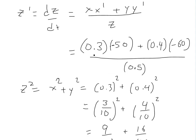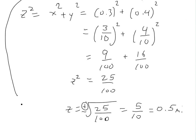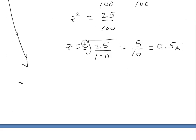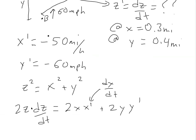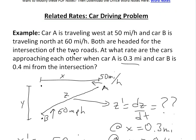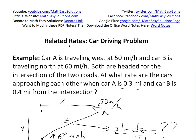Plugging everything into the calculator, z prime equals negative 78 miles per hour. So the cars are approaching each other at 78 miles per hour. That's the rate at which z is changing. That's all for today — if you learned from this related rates problem, you can download the notes in the Dropbox link below and watch related videos in the description. Thanks for watching and stay tuned for another Math Easy Solution.